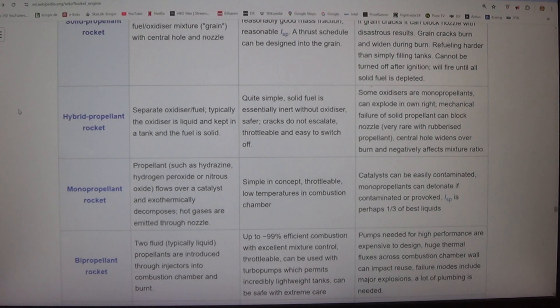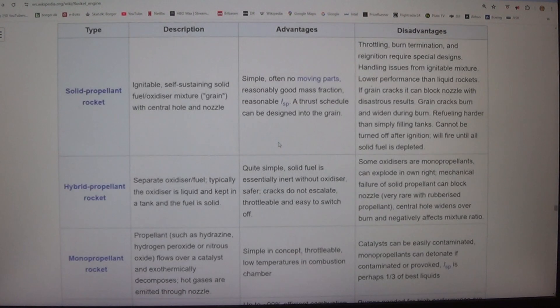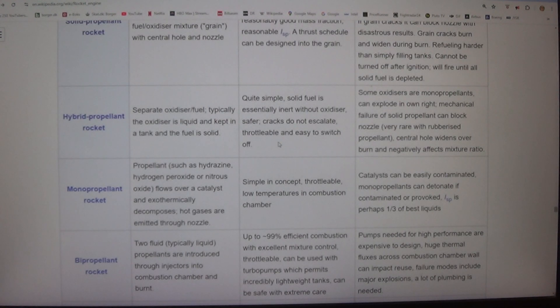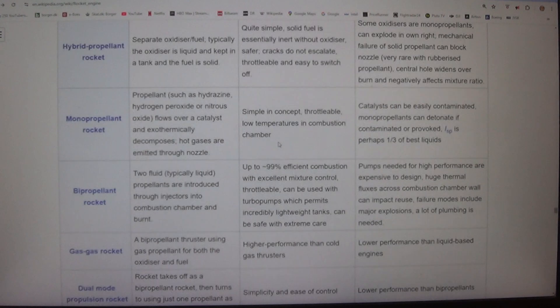Hybrid propellant rockets - separate oxidizer/fuel. Typically the oxidizer is liquid and kept in a tank and the fuel is solid. Quite simple. Solid fuel is essentially inert without oxidizer, safer. Cracks do not escalate. Throttleable and easy to switch off. Disadvantages: Some oxidizers are monopropellants, can explode in their own right. Mechanical failure of solid propellant can block nozzle. Very rare with rubberized propellant. Central hole widens over burn and negatively affects mixture ratio.